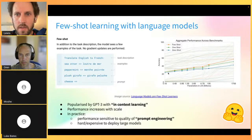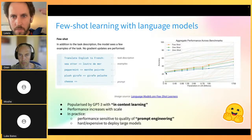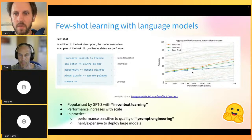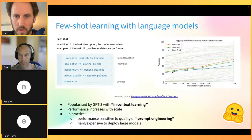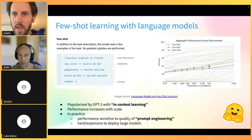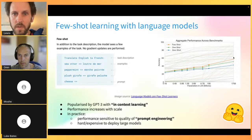In the GPT-3 paper, they showed that as you increase model size, you see rather big gains in the few-shot regime. When dealing with a few hundred million parameters, average accuracy across many tasks is around 30%, but scaling up to a 175 billion parameter model brings that closer to 60% - a fairly non-trivial gain.